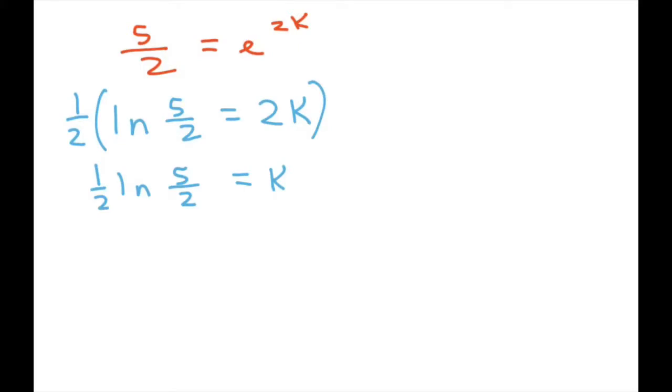Now we have our final equation. Remember we have r equals 4 e to the kt. So plug the k in now. r equals 4 e to the 1 half times ln of 5 halves times t.